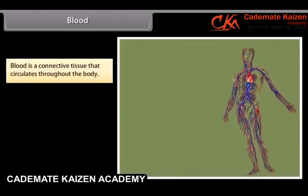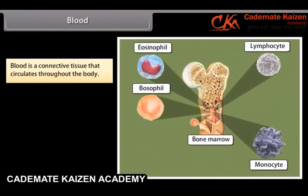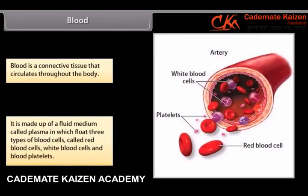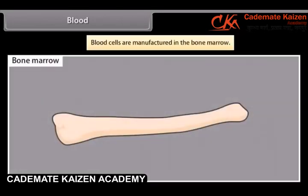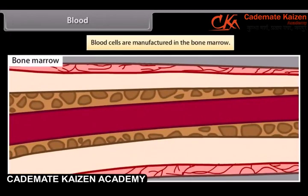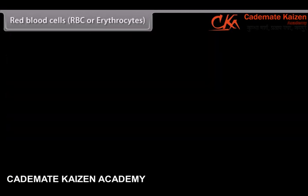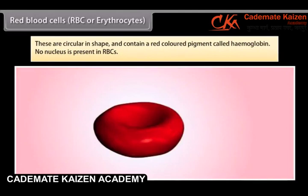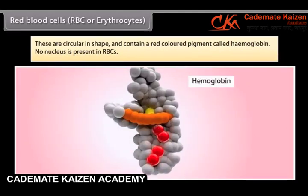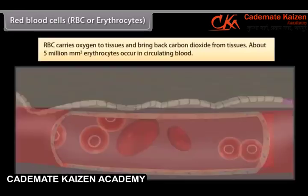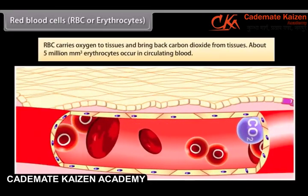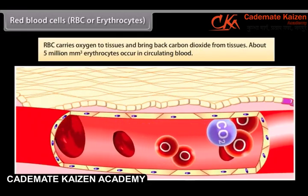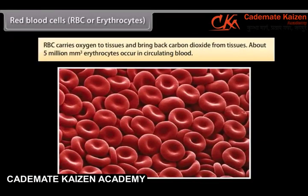Blood is a connective tissue that circulates throughout the body. It is made up of a fluid medium called plasma in which float three types of blood cells: red blood cells, white blood cells and blood platelets. Blood cells are manufactured in the bone marrow. Red blood cells, RBC or erythrocytes, are circular in shape and contain a red colored pigment called hemoglobin. No nucleus is present in RBCs. RBCs carry oxygen to tissues and bring back carbon dioxide from tissues. About 5 million per mm cube erythrocytes occur in circulating blood.